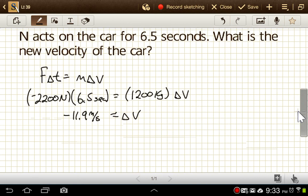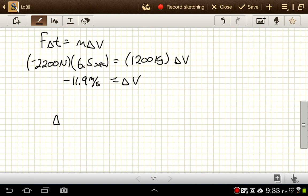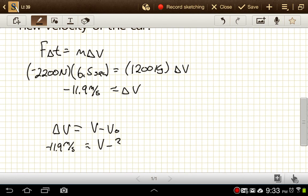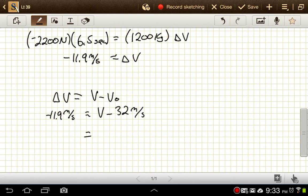So then, since we know that Δv is equal to v minus v₀, we know negative 11.9 meters per second is equal to v minus our starting speed, which is 32 meters per second. That means our ending velocity is going to be 20.1 meters per second.